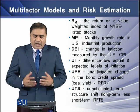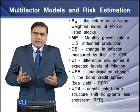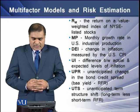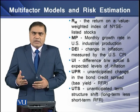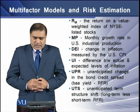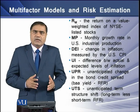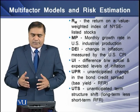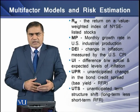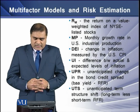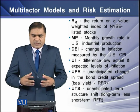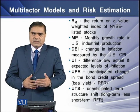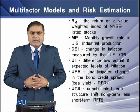Those factors are: RM, the return on a value-weighted index of any recognized stock exchange; MP, the monthly growth rate in U.S. industrial production; DEI, the change in inflation measured by the U.S. CPI consumer price index; UI, the difference between actual and expected level of inflation; UPR, the unanticipated change in the bond credit spread such as BAA yield minus the risk-free rate; and UTS, the unanticipated term structure shift, which is the difference between the long-term and short-term risk-free rate. These are the factors described in the equation set by these researchers.